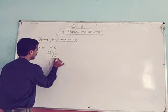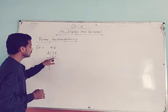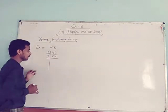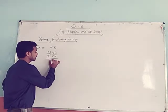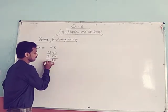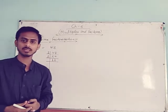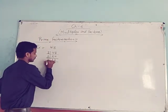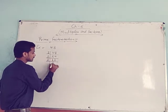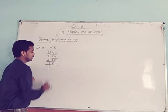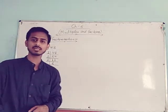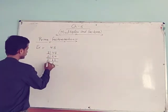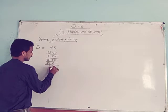24 is also divisible by 2, so write 2 again. Divide 24 by 2 to get 12. Again divide 12 by 2 to get 6. You can see 6 is also divisible by 2. Now divide 6 by 2 to get 3.